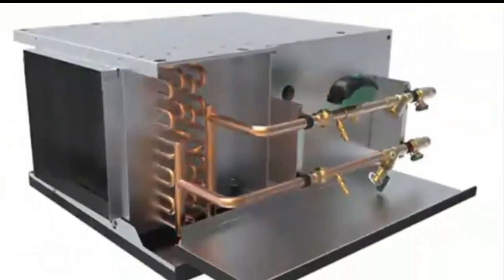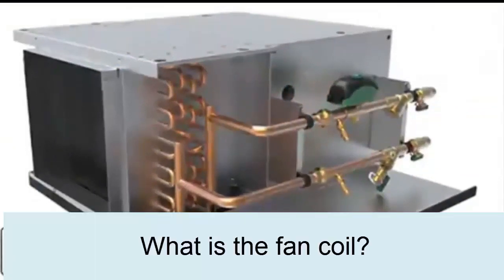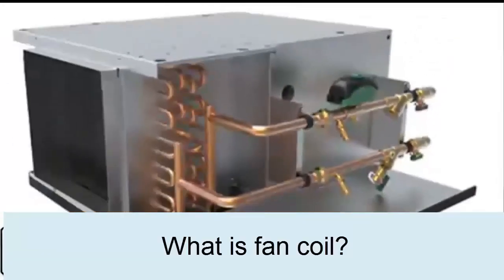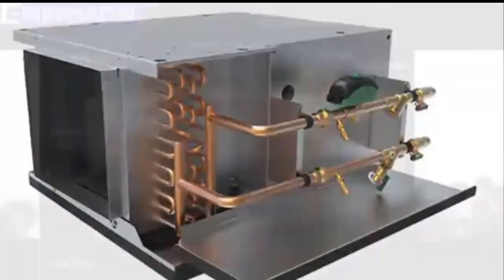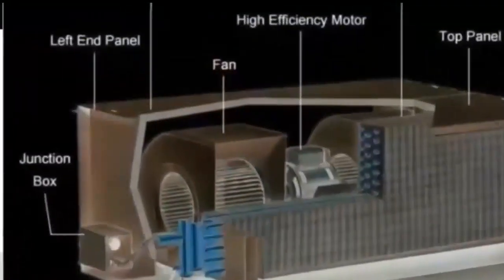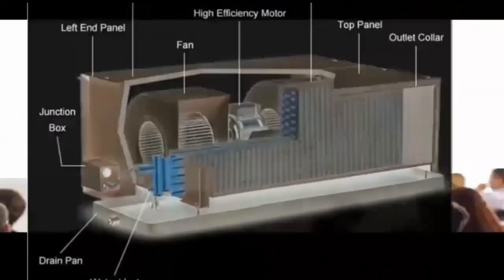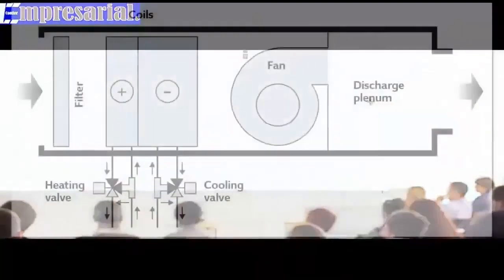Let's start as always with the basics. What is a fan coil? Fan coil units use water as a cooling element. These units receive hot or cold water from a remote chiller or boiler and circulate it through tubes or coils. The fan drives the air and makes it pass through the tubes where the water circulates, thus producing heat transfer.